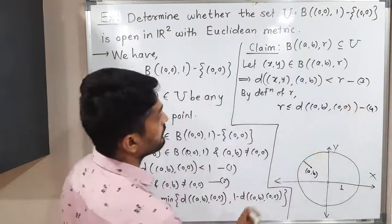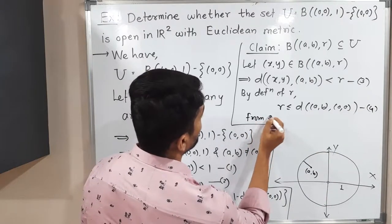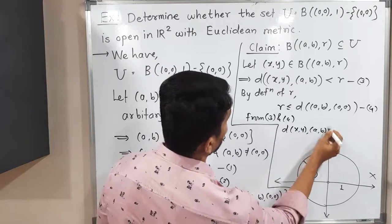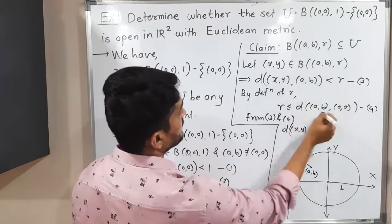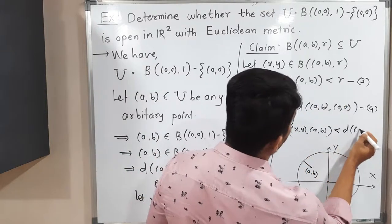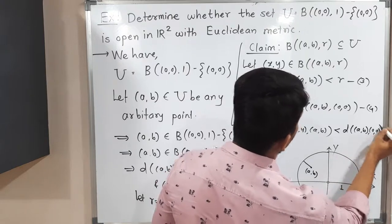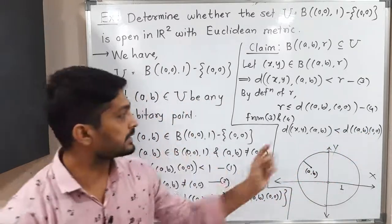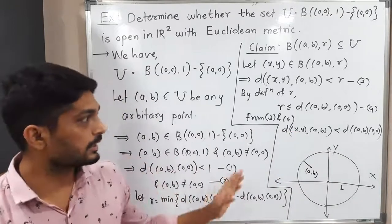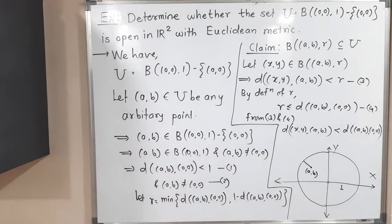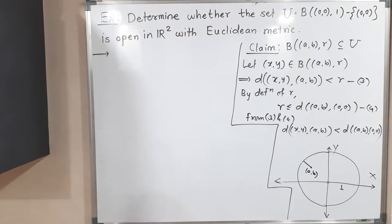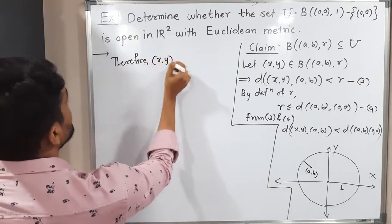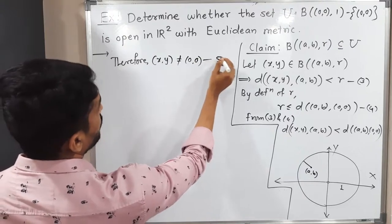Combining equations 3 and 4: d((X,Y),(A,B)) < R and R ≤ d((A,B),(0,0)), so d((X,Y),(A,B)) < d((A,B),(0,0)). That means 100% (X, Y) is not equal to (0,0). The logic is: if the distance from (X,Y) to (A,B) is less than the distance from (A,B) to (0,0), then (X,Y) cannot equal (0,0). So therefore (X, Y) is not equal to (0,0) — this is very important, calling it equation 5.